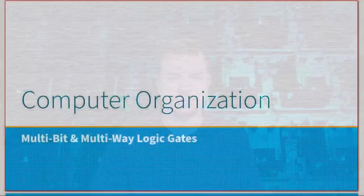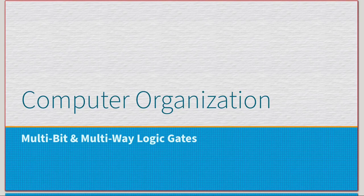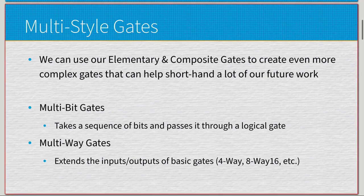I'm going to do a quick video going over the first layer of extending our functionality of combinational logic from our very basic gates to more of a multi-faceted style of gate. There are going to be two different types: multi-bit gates and multi-way gates. They both operate on similar principles but for various different reasons. We use elementary gates like AND, OR, NOT and composite gates like multiplexers and demultiplexers to create even more complex gates.